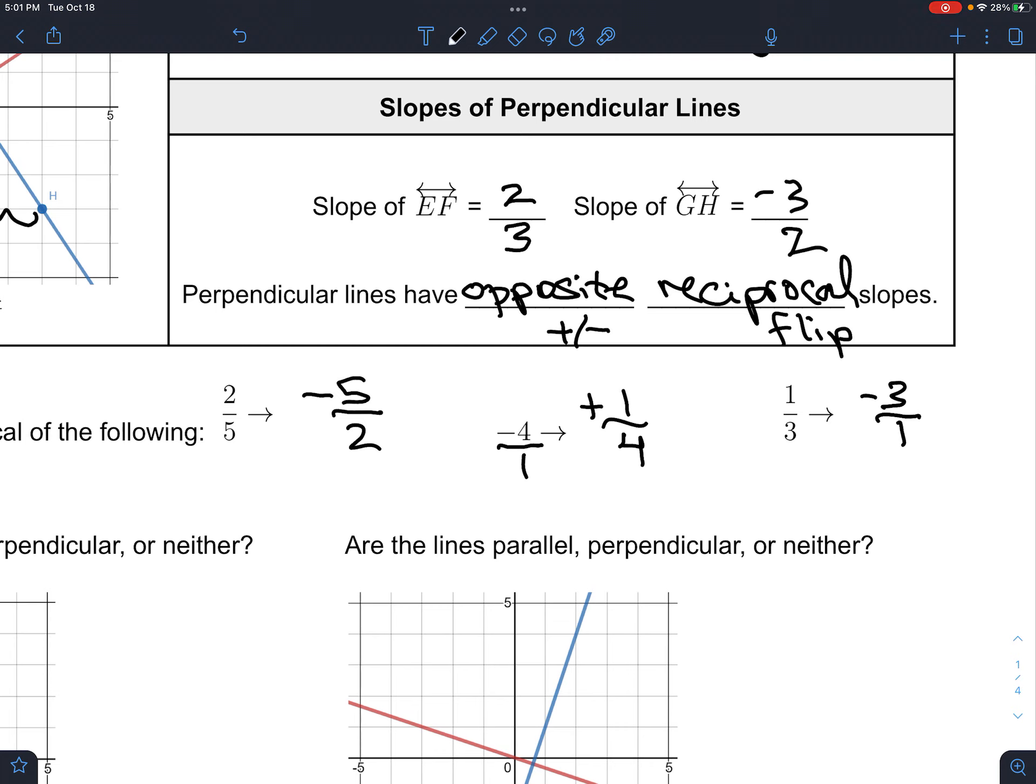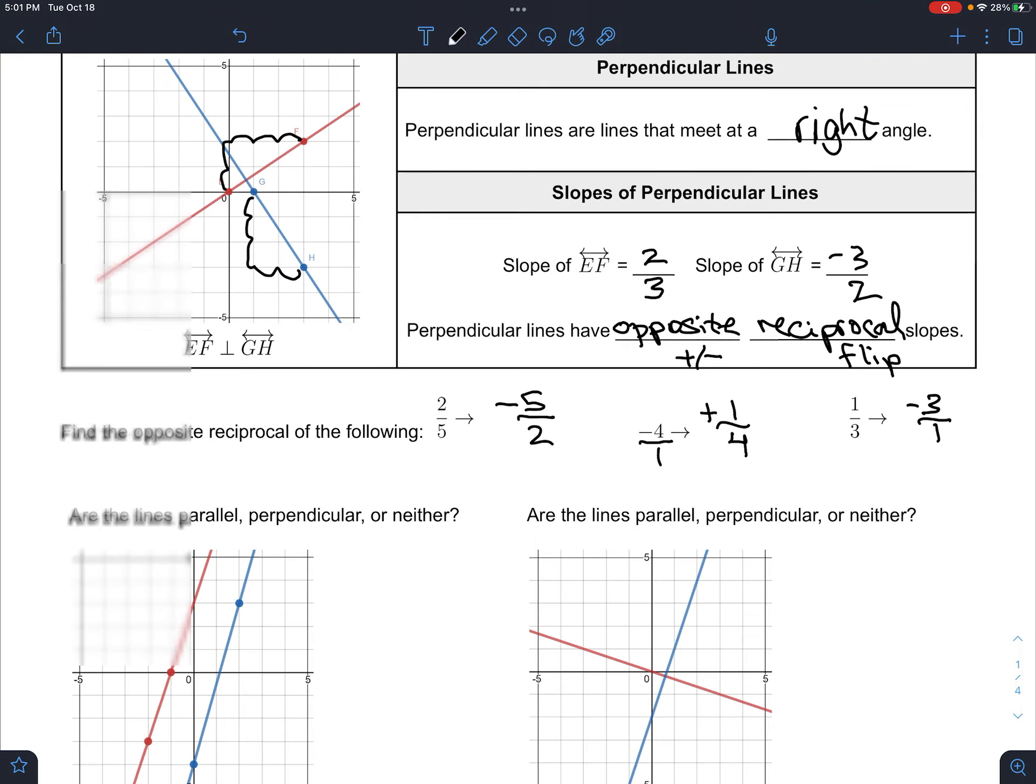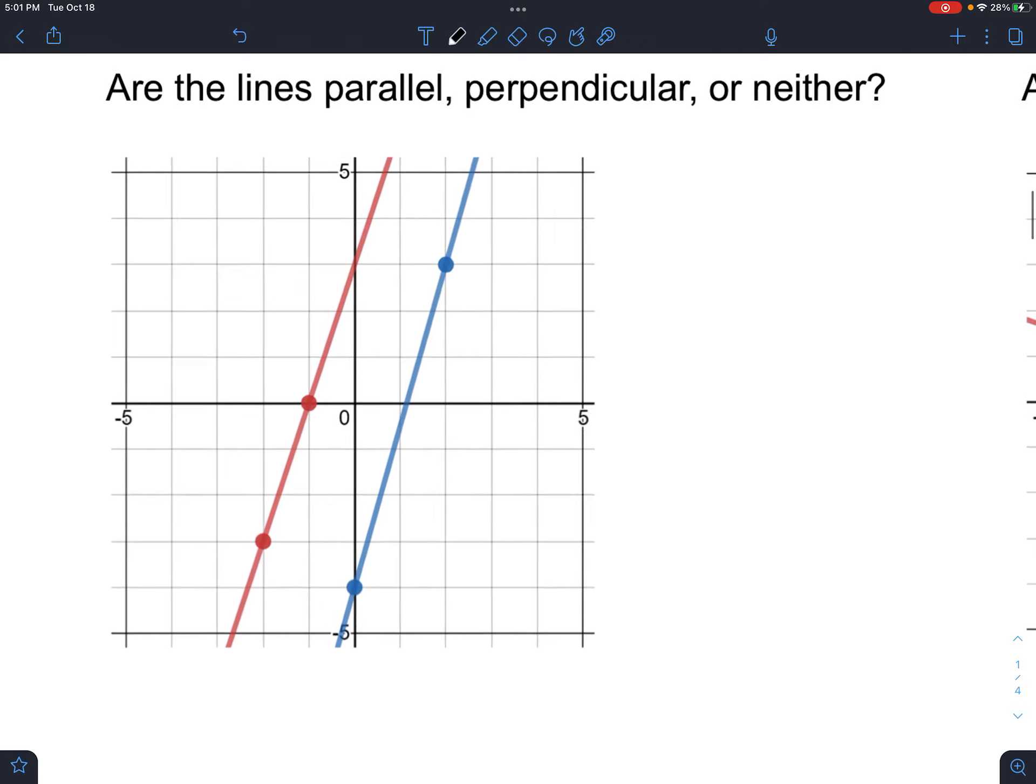One over four. And one over three would end up being flip it and change the sign. Okay? So, perpendicular lines have opposite reciprocal slopes, which is just a long way of saying flip the fraction and flip the sign. Flip the fraction, flip the sign. Okay?